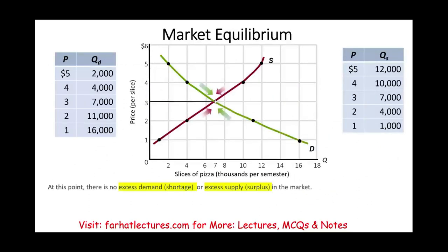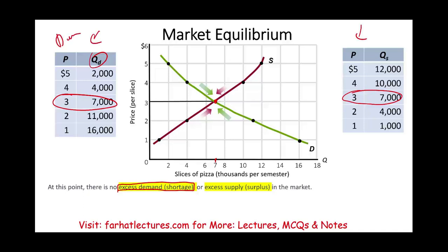Let's take a look at the graph once again and make a few more comments. At $3 and 7,000 slices, there's no excess demand — no one wants more pizzas. Enough people will consume the 7,000. Notice: quantity demanded 7,000, quantity supplied 7,000. At this point we are happy. 7,000 slices will make the producer happy because they can sell every single slice, and the consumers will buy every single slice. There is no excess demand and no excess supply.